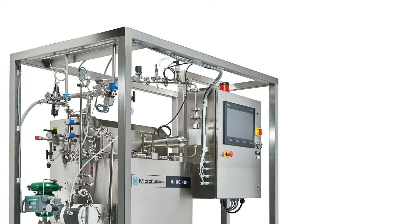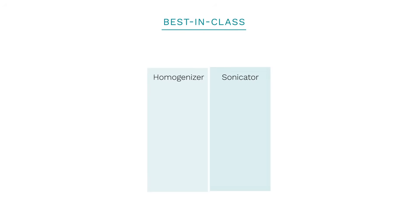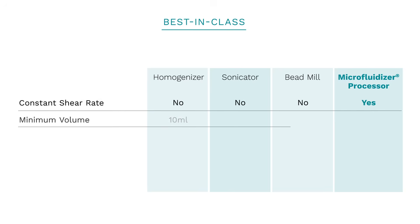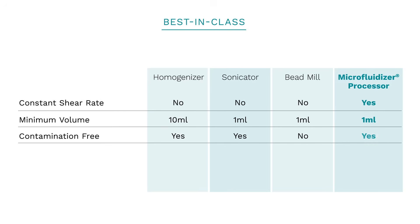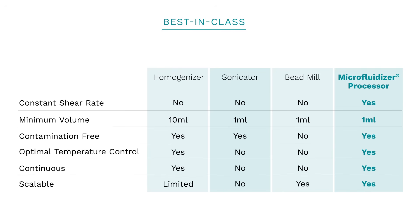So how does microfluidizer technology compare to other cell disruption methods? Whether it's another homogenizer, sonicator, or bead mill processor, microfluidizer processing gets superior results as it relates to constant shear processing, small volume processing, contamination-free processing, temperature control, continuous processing, and scalability.